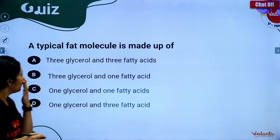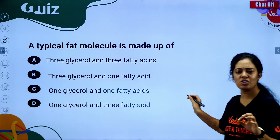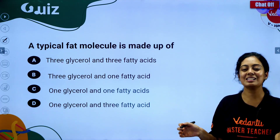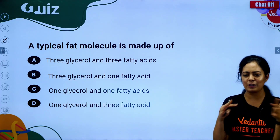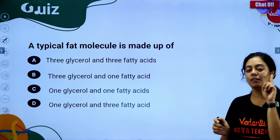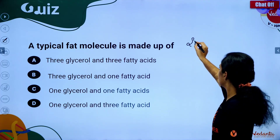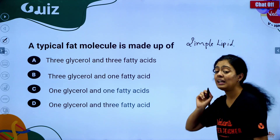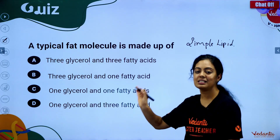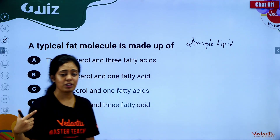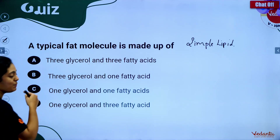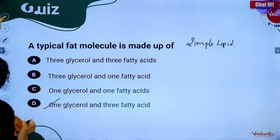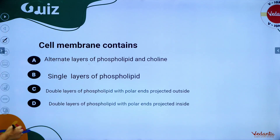Practice question: A typical fat molecule is made up of — options are three glycerol plus three fatty acids, one glycerol plus one fatty acid, or one glycerol plus three fatty acids. In a simple lipid, there is one glycerol and three fatty acids. Please answer in the comment section.